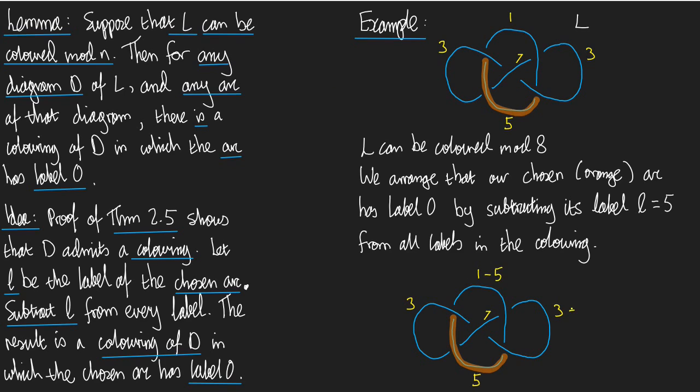So, here's a copy of the diagram. And now we're going to modify it by subtracting L from everything. So, we've got 1 minus 5, 3 minus 5, 7 minus 5, another 3 minus 5, and then 5 minus 5 down the bottom. What's 1 minus 5? Mod 8. That's minus 4. Minus 4 mod 8 is 4.